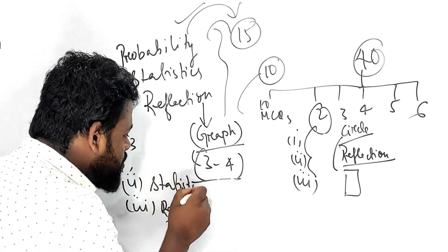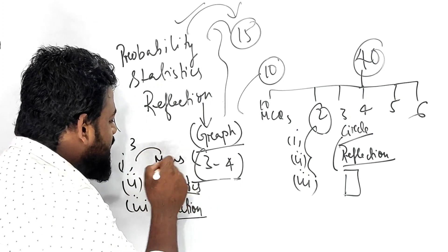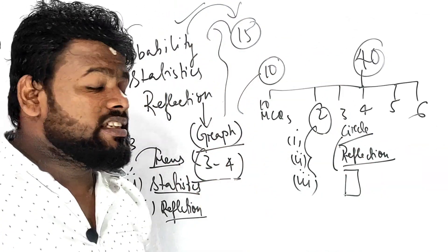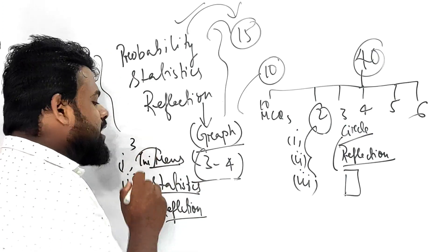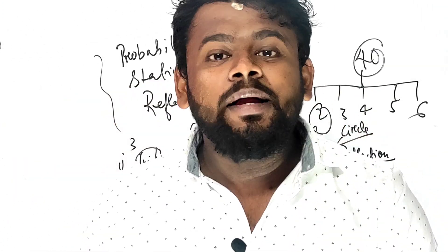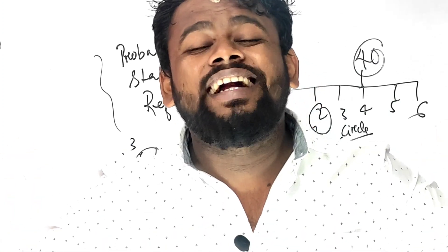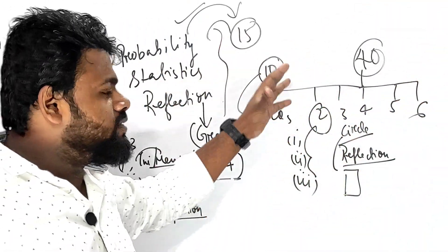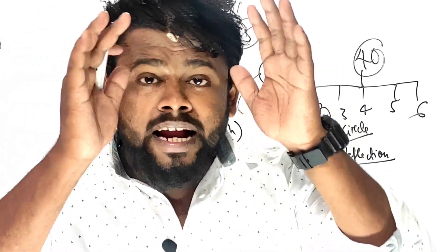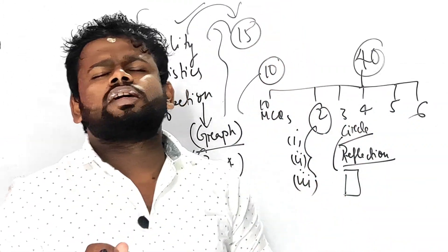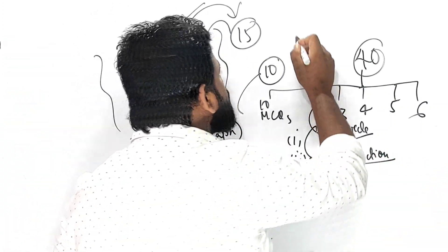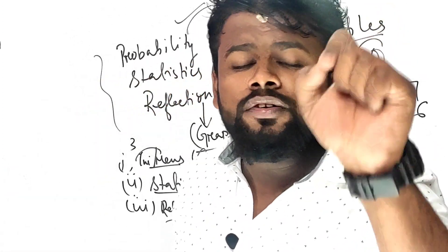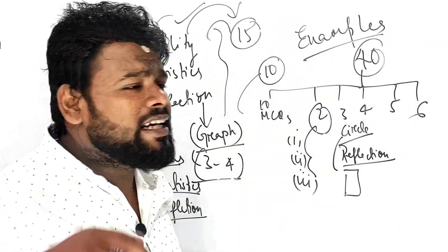If a Statistics question comes, then either a Mensuration question will be there or a Trigonometry question will be there. These are the question scenarios based on experience and trending patterns — higher brothers and sisters have scored this way, as this type of question generally comes in board examinations. My dear students, do not read randomly. Give a lot of time to examples and exercise questions if you want to score 40 out of 40.